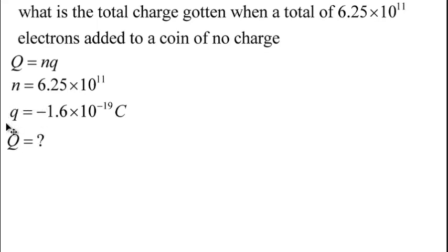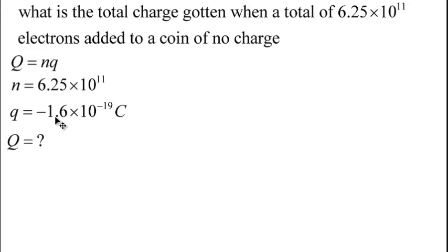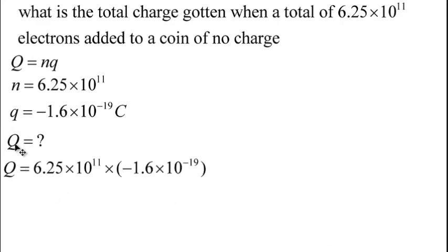Why are we using a negative sign here instead of positive? Because adding electrons creates a negative charge — this is determined by the equation and common sense. If we know the total charge is positive, we use a positive value; if negative, we use a negative value for e. Multiplying N by the constant and punching it into the calculator gives us the final answer.